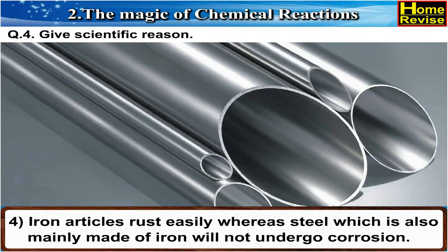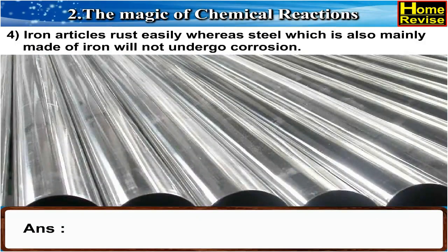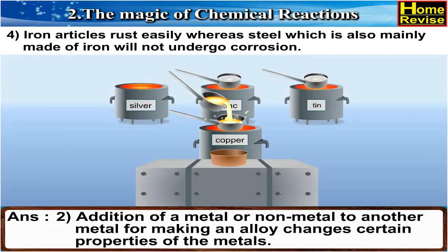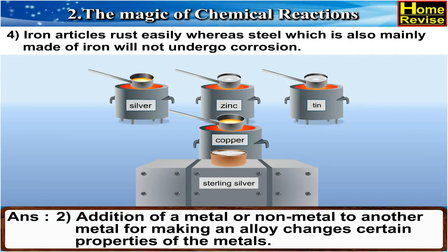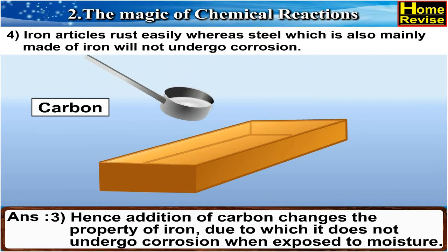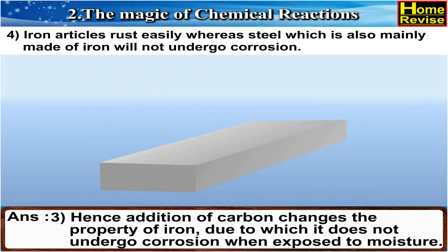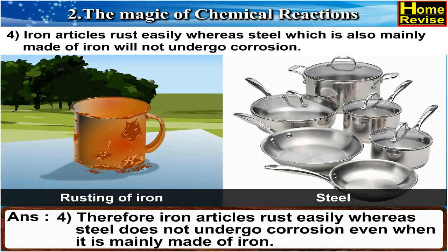4. Iron particles rust easily, whereas steel, which is also mainly made up of iron, will not undergo corrosion. Answer: Steel is an alloy of iron and carbon. Addition of a metal or non-metal to another metal for making an alloy changes certain properties of the metals. Hence, addition of carbon changes the property of iron, due to which it does not undergo corrosion when exposed to moisture. Therefore, iron articles rust easily, whereas steel does not undergo corrosion even when it is mainly made up of iron.